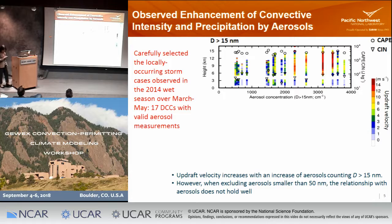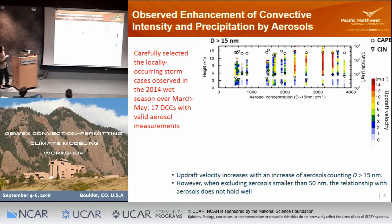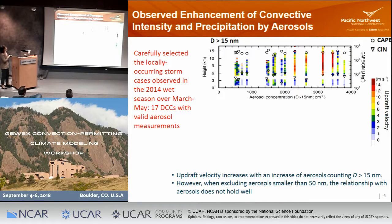We carefully selected locally occurring storm systems observed in the 2014 wet season and found 17 such cases with valid aerosol measurements and valid updraft core measurements. Shown here are the 17 cases arranged by aerosol concentration, contoured at the mean value of the top 10% of updraft speed as a vertical profile. As you can see, there is a clear increase — the increase is pretty dramatic if you look at the scale. The CAPE is shown as circles; it is pretty similar with some variability. However, we see a lot of low-shear cases in the low-aerosol cases, yet we did not find a correlation with shear.